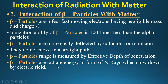Beta particles radiate energy in the form of X-rays when they are slowed down by an electric field. This is similar to how X-rays are produced: when electrons are strongly decelerated and retarded, they emit energy in the form of X-rays.